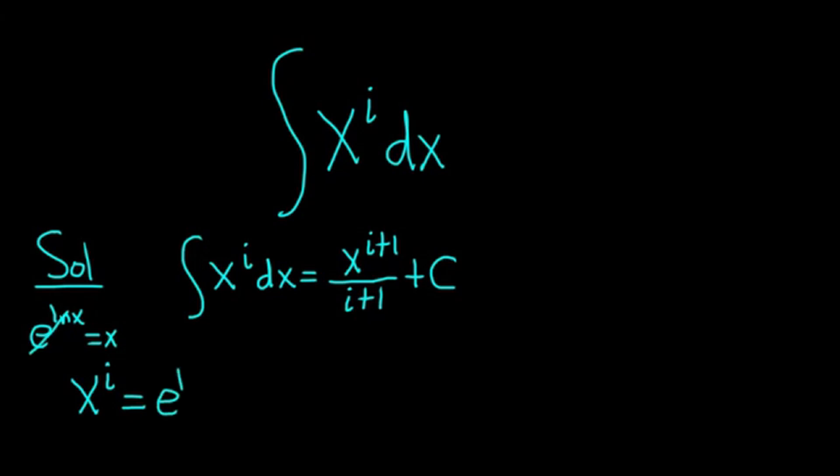So this is e to the ln x to the i, simply replacing x with e to the ln x. Properties of exponents now say we can take the i and multiply it by ln x. This is e to the i times ln x.